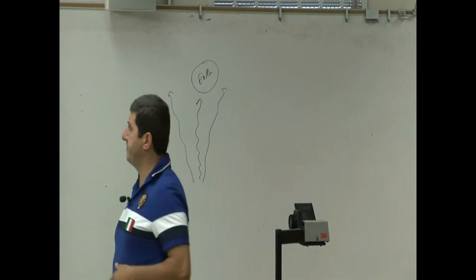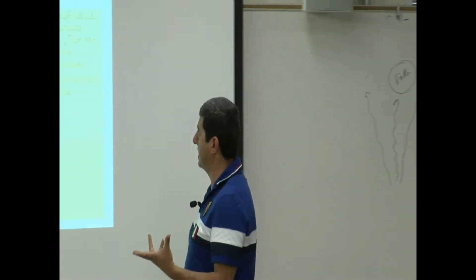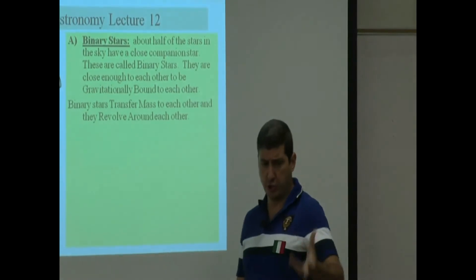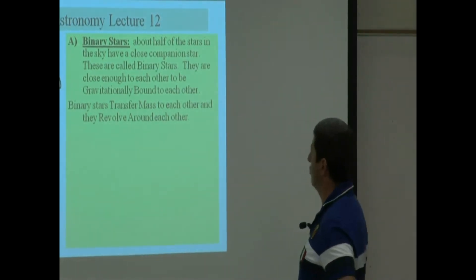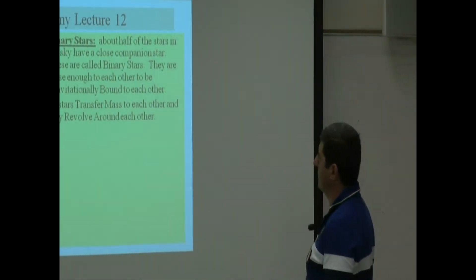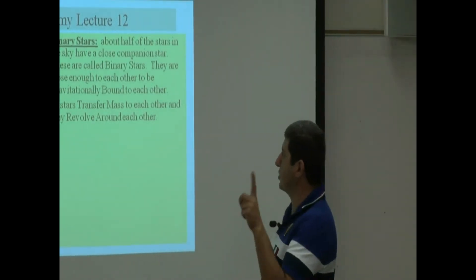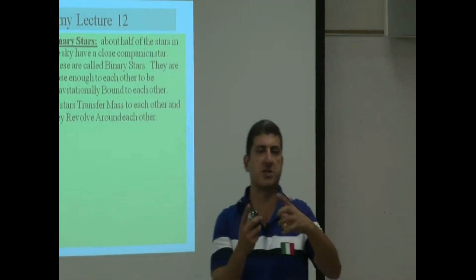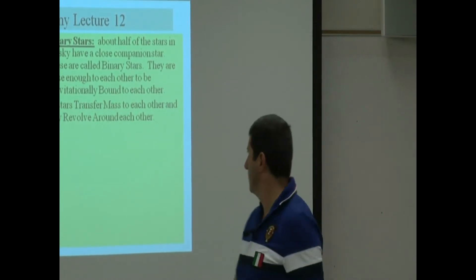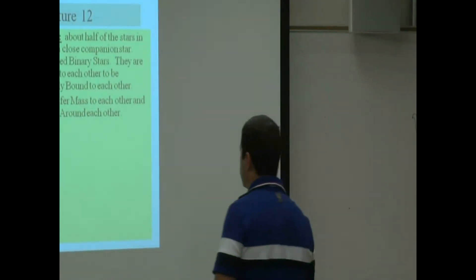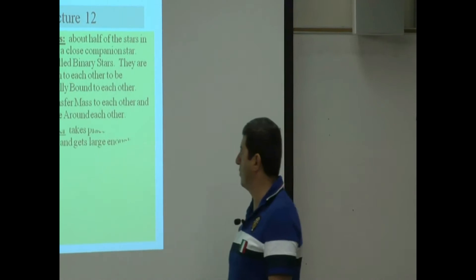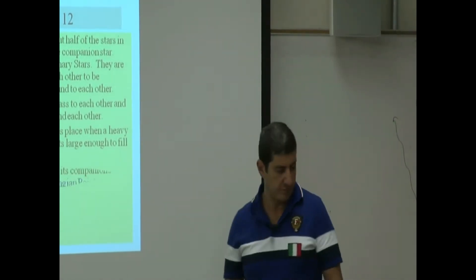About half of the stars in the sky we expect to have a close companion star called a binary star. They are close enough to each other to be gravitationally bound to each other, so they revolve around each other and they start feeding each other too. Binary stars transfer mass to each other and they revolve around each other.